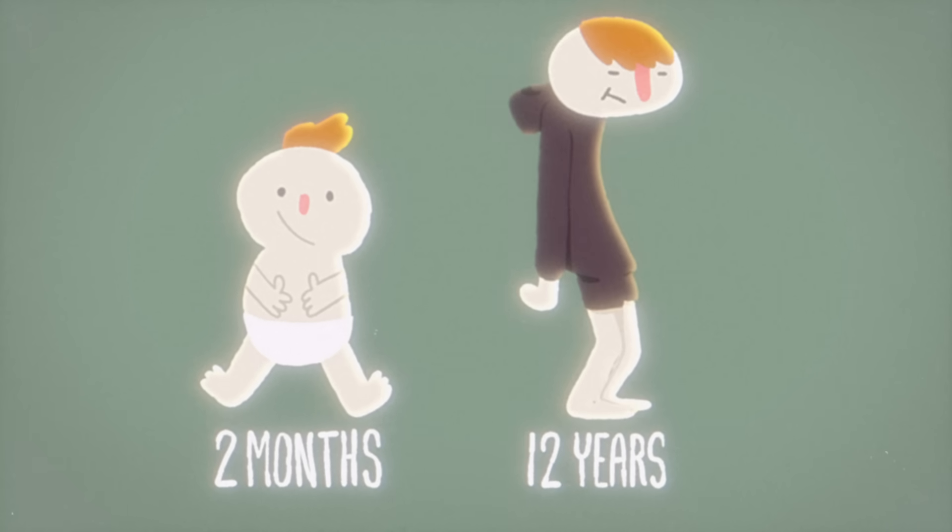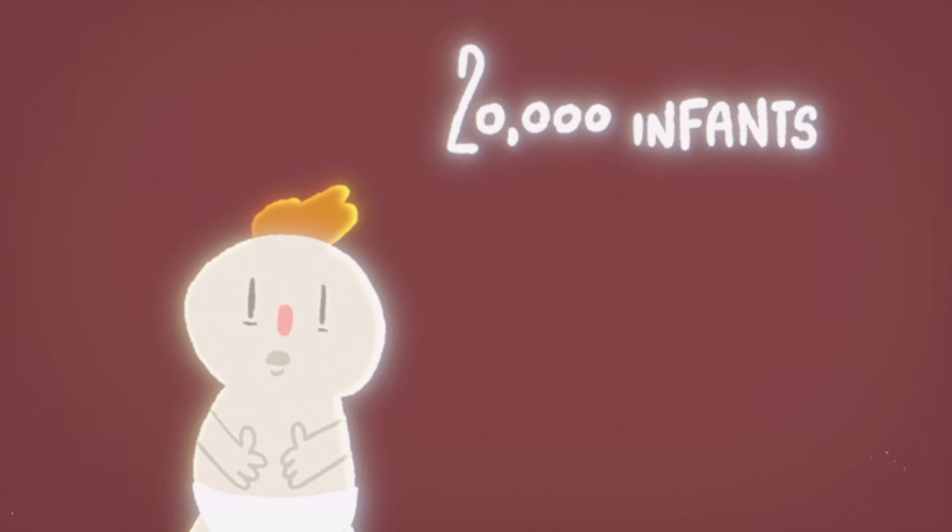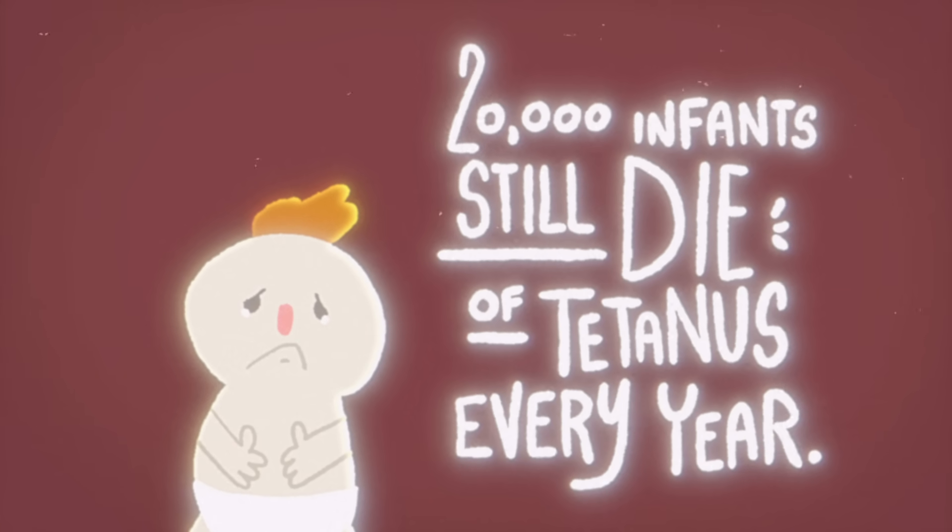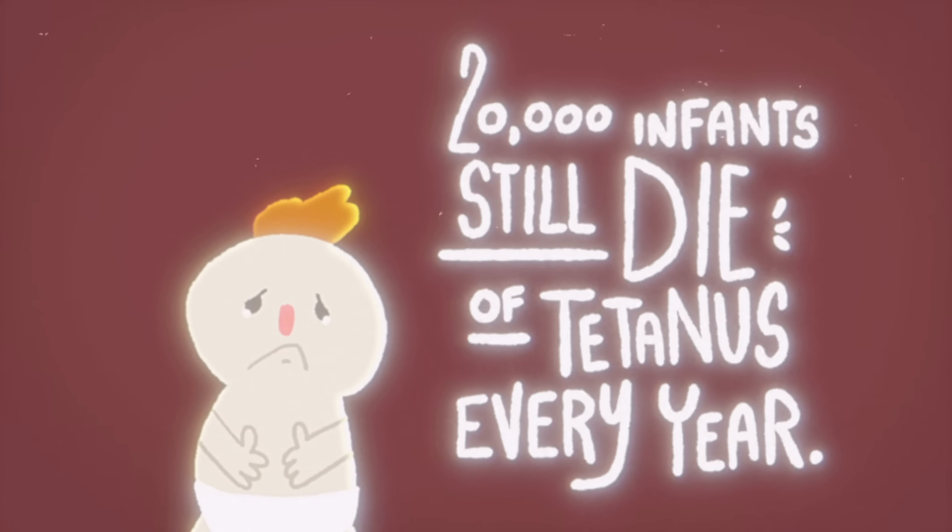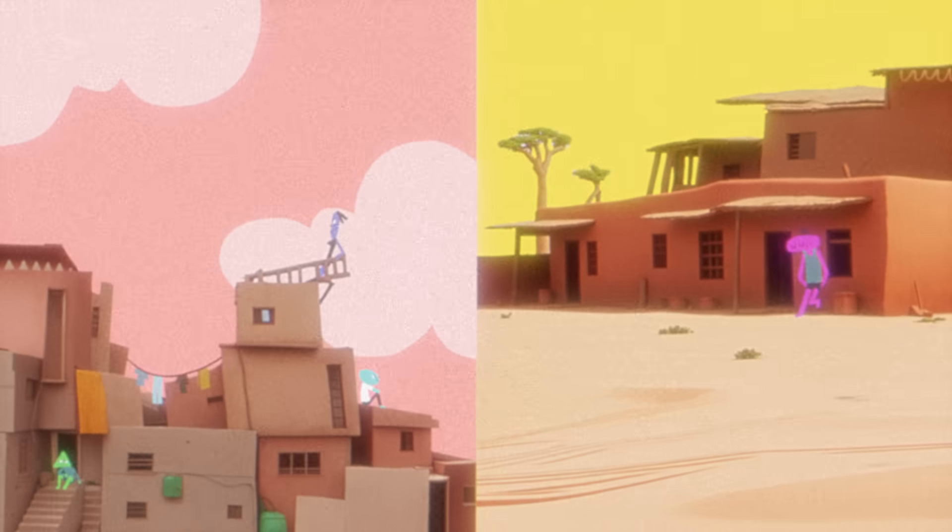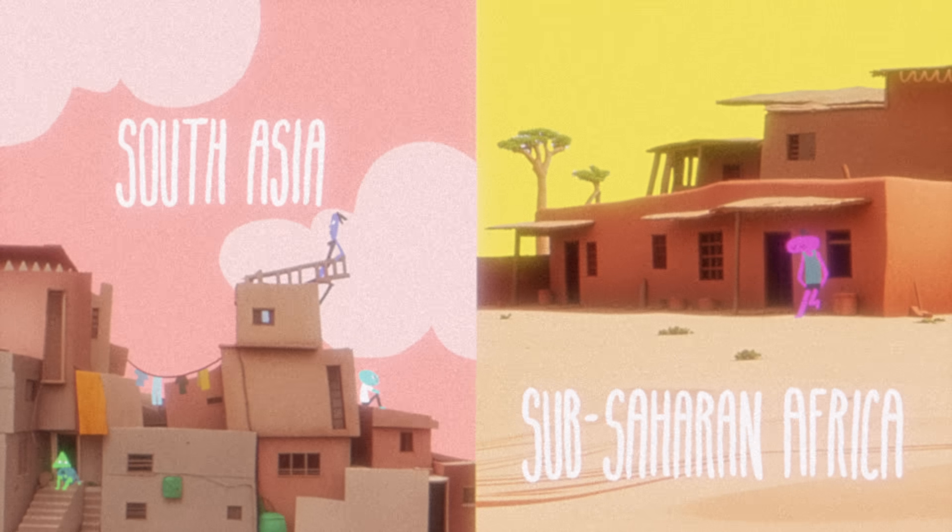Experts recommend a series of shots and boosters, beginning at two months old and ending around age 12. Yet, over 20,000 infants still die of tetanus every year, mostly in low- and middle-income countries where vaccine access is limited, including South Asia and Sub-Saharan Africa.